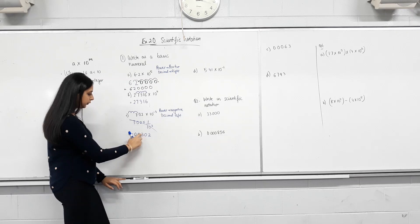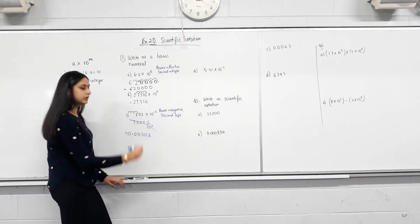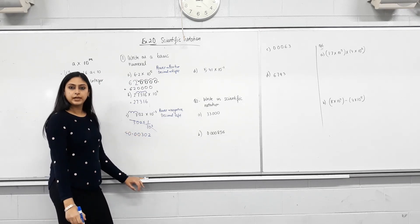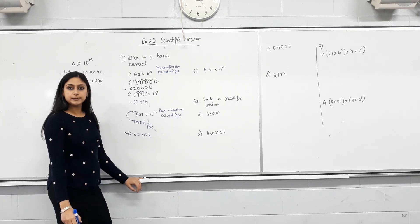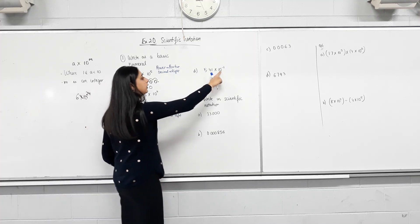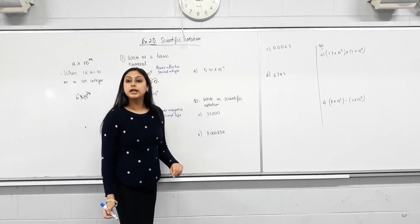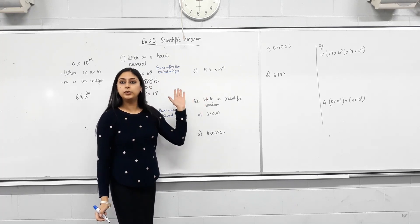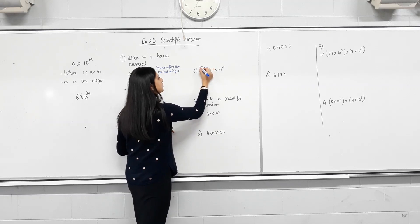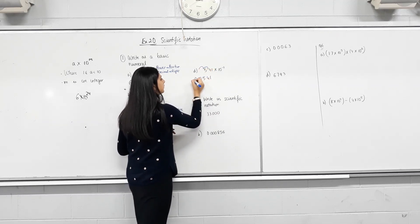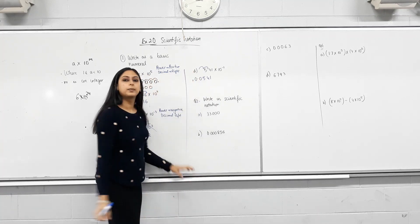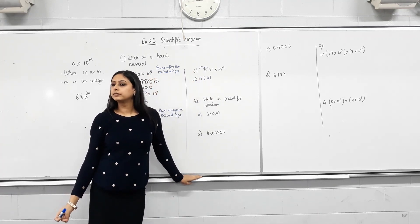So decimal has moved one, two, three places. Make sense? Yeah. Any questions? Next one. Again, the index is negative. Which way will the decimal move? Left. How many places? Two. Two. So one, two. Fill the gaps. Happy with that? Yeah. Great.